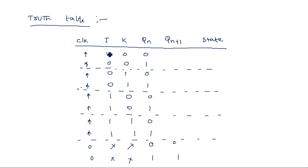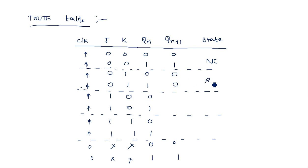When the clock has a rising edge and both J and K are zero, it is no change — previous state 0 gives output 0, previous state 1 gives output 1. When clock is rising edge and J equal to 0, K equal to 1, output is 0 — this is the reset state, because S equals J equals 0 and R equals K equals 1, meaning reset operation is performed. When J equal to 1 and K equal to 0, it is the set operation — output is set to 1.